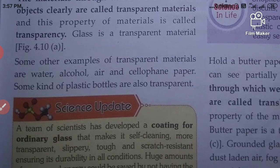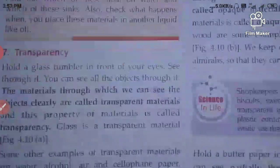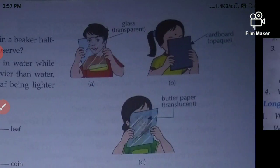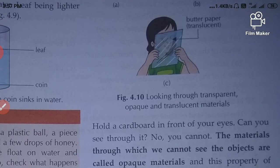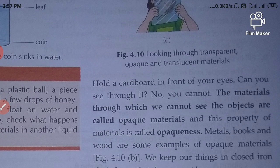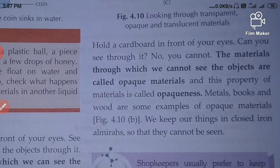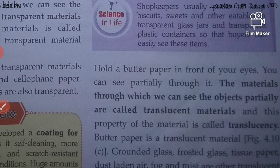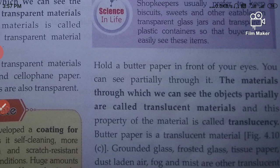The materials through which we cannot see the object are called opaque materials. The materials through which we can see the object partially are called translucent materials, and this property is called translucency.